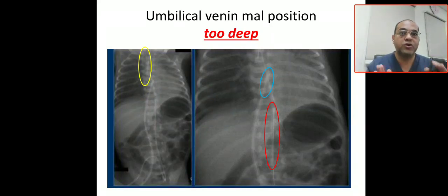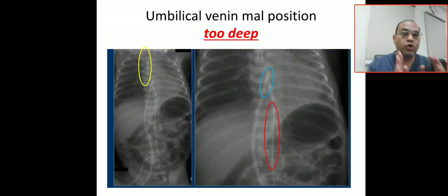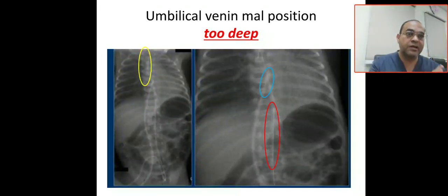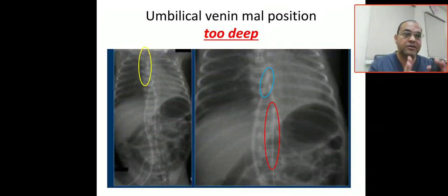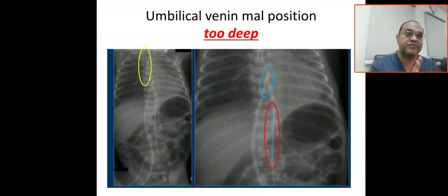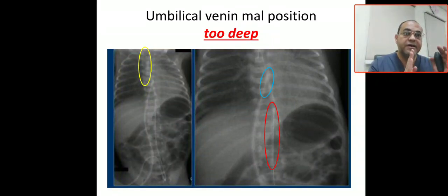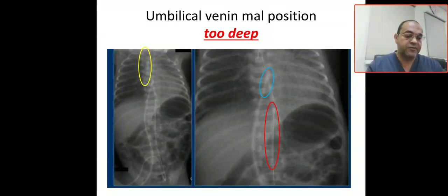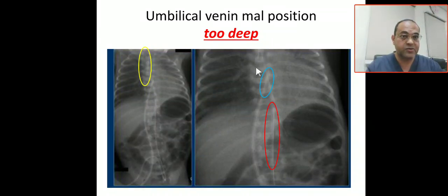We are going to talk about the normal anatomy of the umbilical venous catheter and umbilical arterial catheter, and malposition of the umbilical venous catheter and the umbilical arterial catheter. If you check here, this is an X-ray.